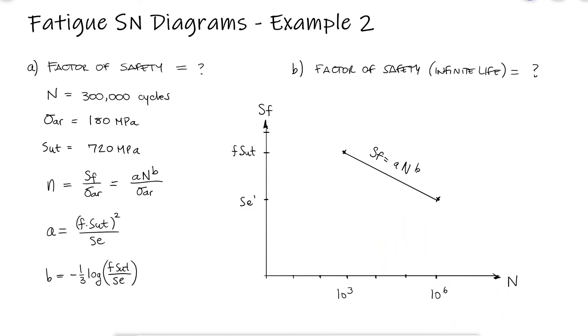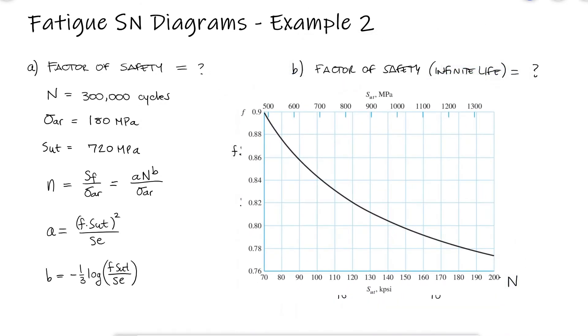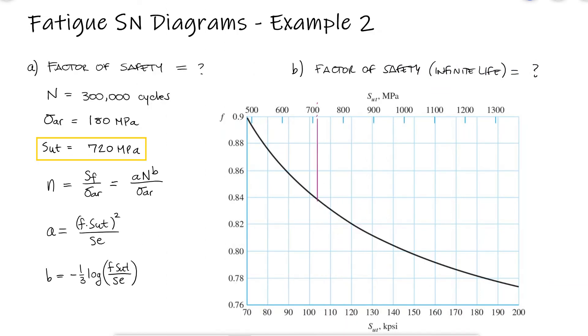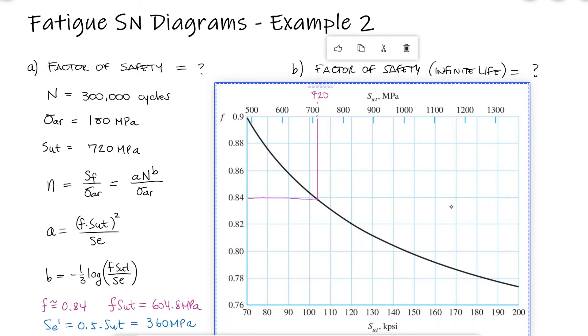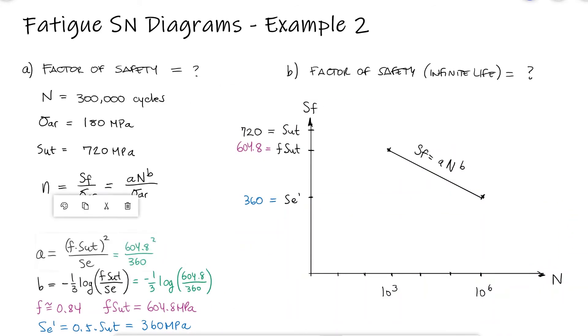To find the f coefficient, we use the same diagram we used in example 1, this time using an ultimate strength of 720 MPa. With this value and the rough estimate for the endurance limit, S-E prime, we can find the values for the a coefficient and the b exponent to find the fatigue strength for 300,000 cycles.